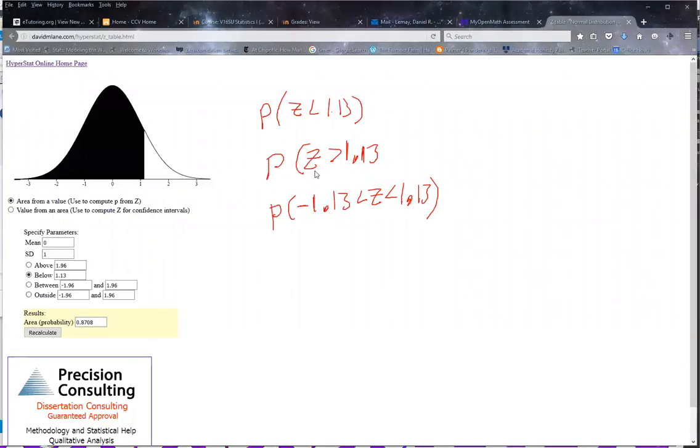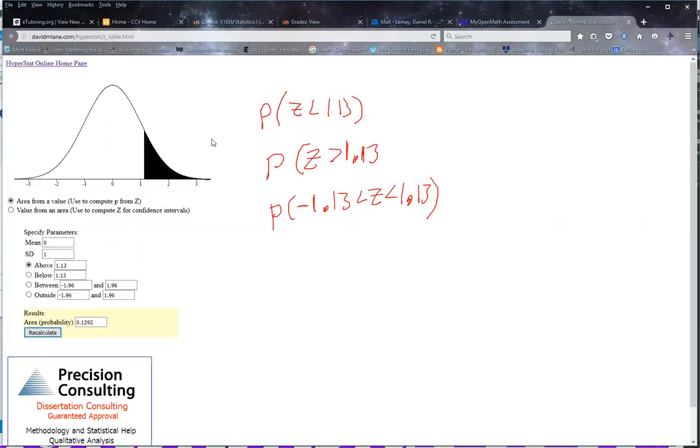Now for the next one, I want to do shaded to the right. So I'm going to go above 1.13. And notice that shades it to the right. And it's greater than, so it's above, and that's the 1.13.